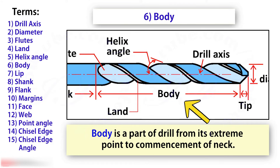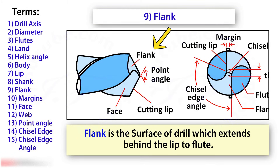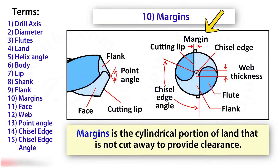Body is the part of the drill from its extreme point to the commencement of the neck. Shank is the part of the drill by which it is held and driven; the shank may be straight or taper. Flank is the surface of the drill which extends behind the lip to the flute. Margin is the cylindrical portion of the land that is not cut away to provide clearance.